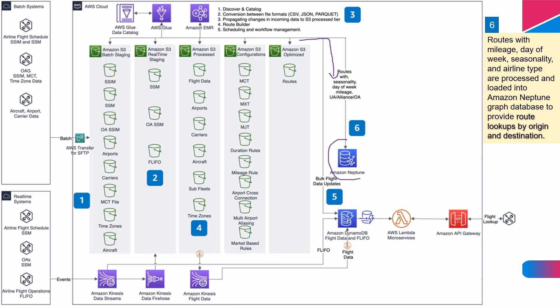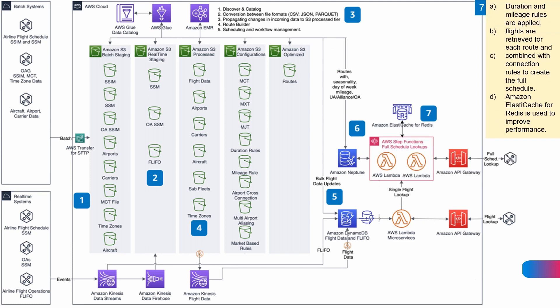Amazon Neptune is a graph database service that makes it easy to build and run applications that work with highly connected datasets. It supports popular graph models like PropertyGraph and W3C's RDF, and their respective query languages like Apache TinkerPop Gremlin and SPARQL. To provide route lookups by origin and destination, routes with mileage, day of week, seasonality, and airline type are processed and loaded into Amazon Neptune graph database. Once Neptune DB is loaded, duration and mileage rules are applied, flights are retrieved for each route, and combined with connection rules to create the full schedule. Connection rules are maintained in Amazon DynamoDB.